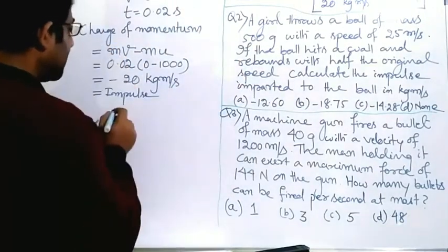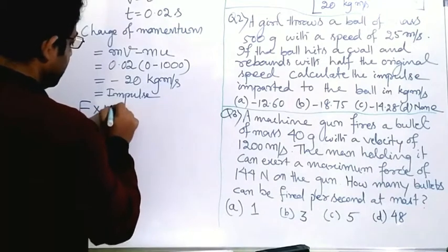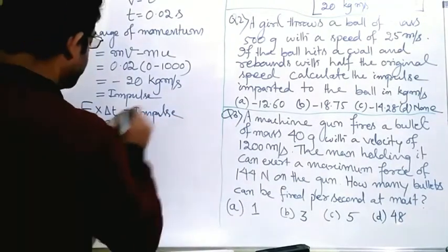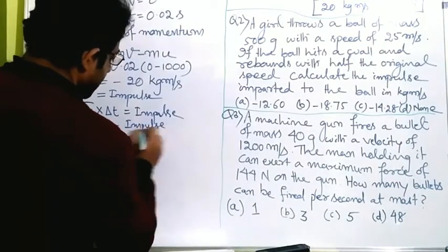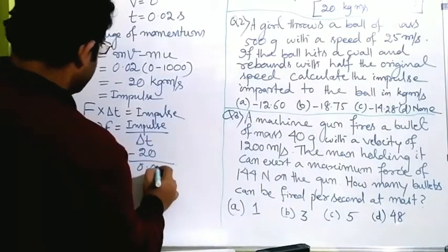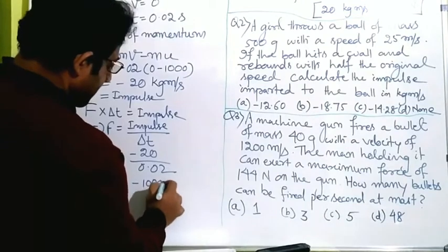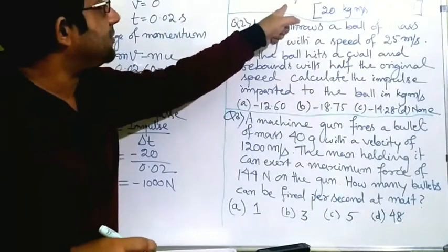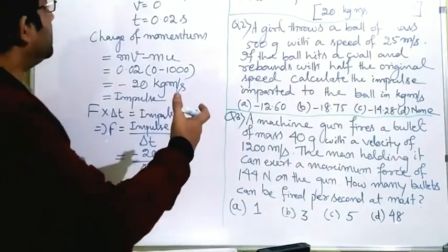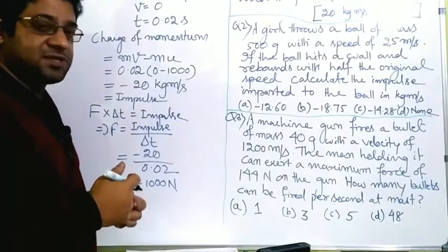Now for the force of the blow: impulse equals force multiplied by delta t, so force equals impulse divided by delta t. That is minus 20 divided by 0.02, which equals minus 1000 newton. The magnitude of the force of the blow is 1000 newton. The minus sign indicates the force is in the opposite direction to the bullet's initial motion — the reactive force opposes the direction of travel.